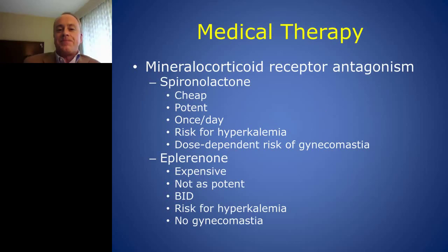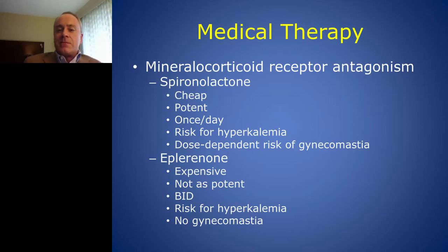Medical therapy right now consists of two major drugs: mineralocorticoid receptor antagonists. The first, spironolactone, was synthesized in 1953 — it's consequently very cheap, very potent, and convenient taken once a day. There is a risk of hyperkalemia, especially in patients with concomitant renal disease. Unfortunately there is a significant dose-dependent risk of breast development in men or gynecomastia, occurring between 5% and 25% of patients. A newer agent, eplerenone, was developed about 10 to 15 years ago. It's more specific with no risk of gynecomastia, but it is not as potent and costs considerably more.